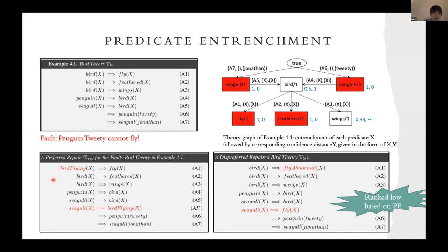The left one is a desired repair because it can split bird into flying one and implicitly non-flying one, so the seagull can be given as a flying bird while the penguin is not.